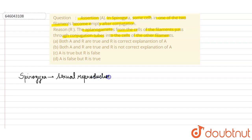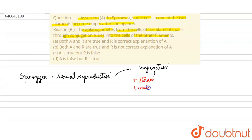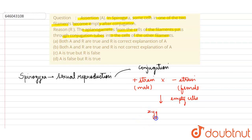Conjugation is a process in which the aplanogametes — the positive strain acting as the male gamete — fuse with the negative strain, which is the female. As a result of this fusion, some empty cells are formed because of the transfer of nuclei, and this results in the formation of a zygospore, which is usually tetranucleate and triple-layered.